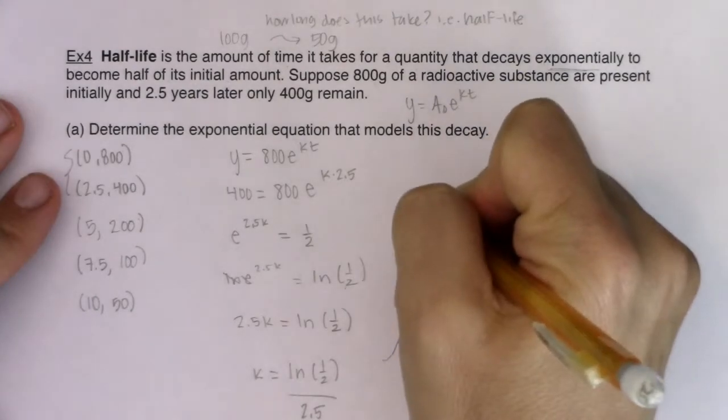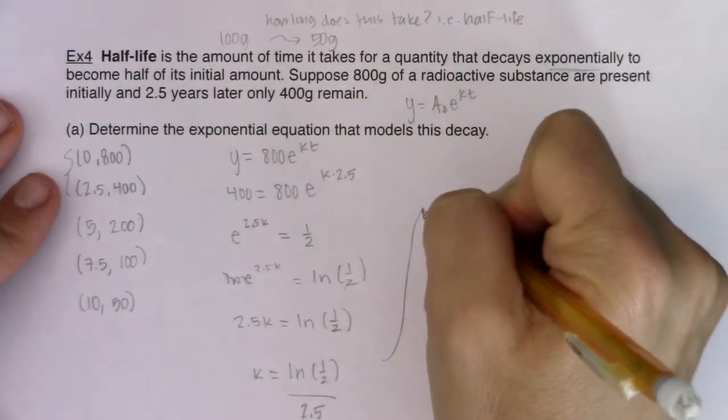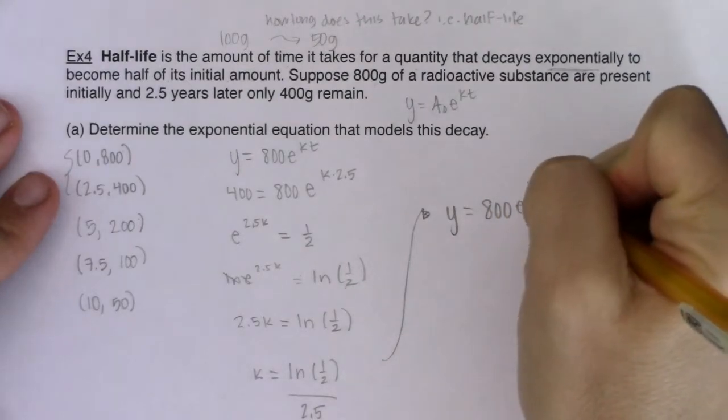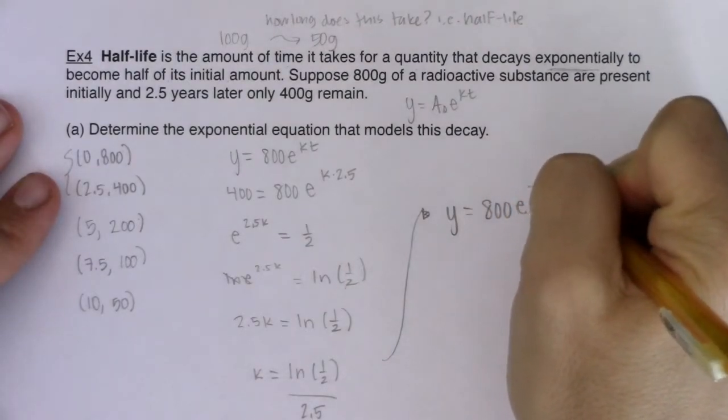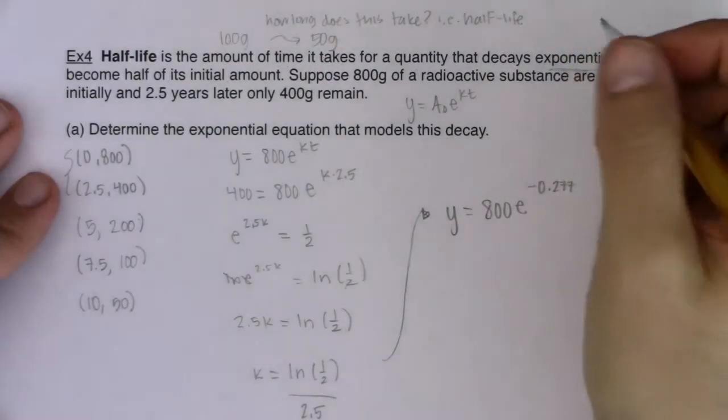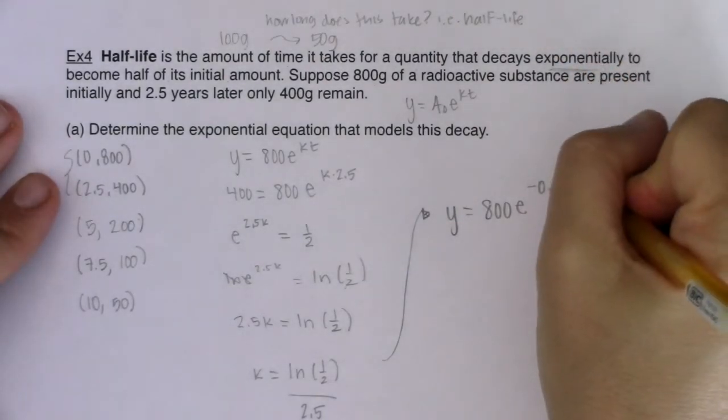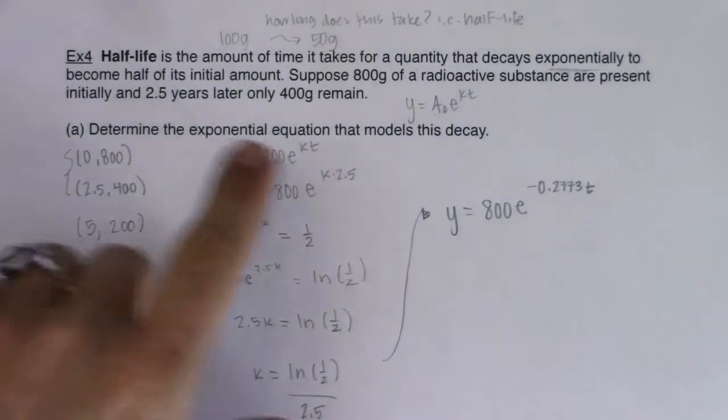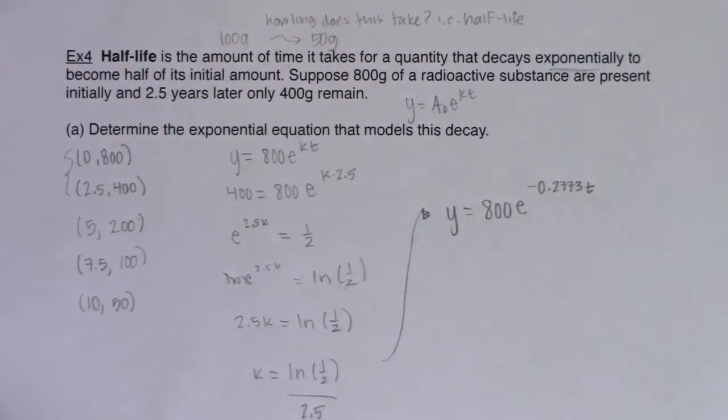So here we go. That means ultimately for my model, I'm going to have y equals 800 e to the negative 0.2773t. And you don't have to go four decimals, I just felt like it this morning. So there's my model. It's exponential, it's modeling my data, I'm feeling good.